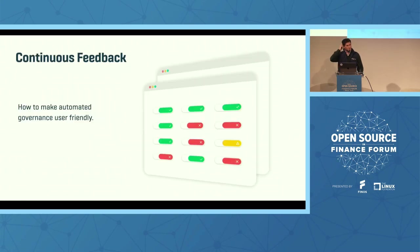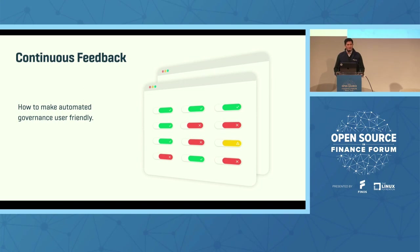With an attestation API using this architecture, you can build some really useful things. That brings us to continuous feedback. Automated governance has a lot of granular data — by design — because we're trying to take humans out of the governance of software development and naturally have to provide a lot of evidence to suffice that. So how do we design that in a way that's user-friendly and encourages developers to want to participate in this automated governance process? As we say, make the right thing the easy thing.